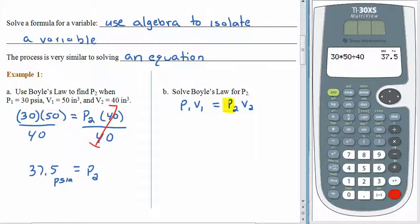It works the same way. If you want to isolate P sub 2, then we have to move V sub 2. And it's P sub 2 multiplied by V sub 2, so we just divide by it. The same way that we divided by the 40 over here, we'll divide by V sub 2 over there. We don't have to use any numbers at all. Whatever it is, we'll divide out on the right hand side. P sub 2 is left all alone, and it's worth P1 times V1 all divided by V2.